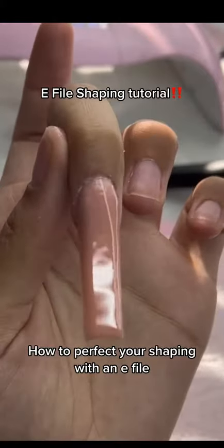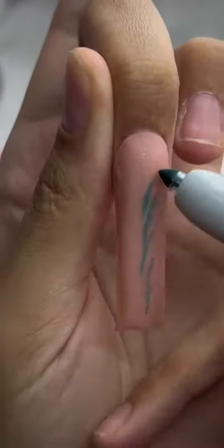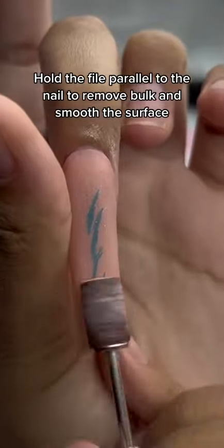How to Perfect Your Shaping with an E-File. Hold the file parallel to the nail to remove bulk and smooth the surface.